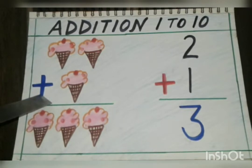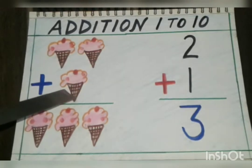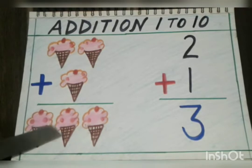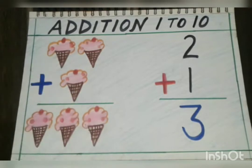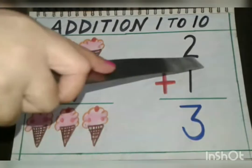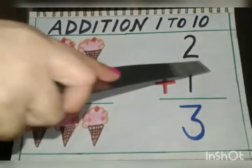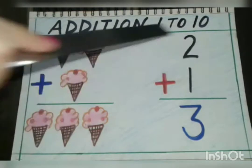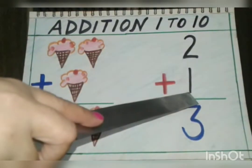So let's count one, two, three. I have three ice creams. Now let's write these pictures in the number form. Here I have two ice creams, so number two will come here. Here one ice cream, so I will write one here.